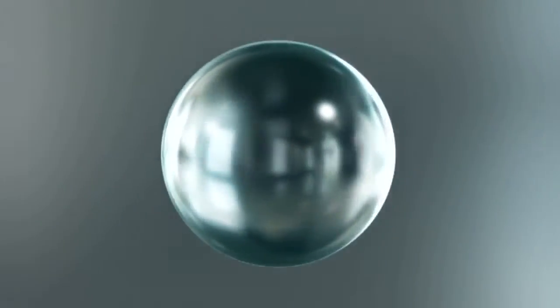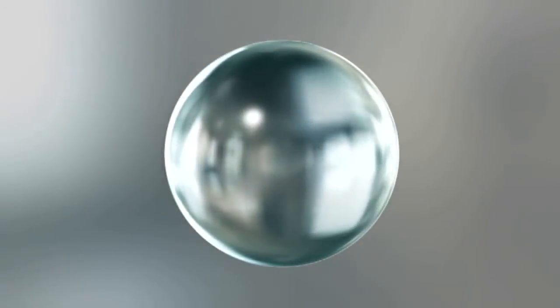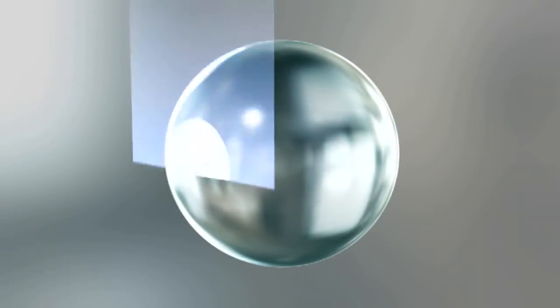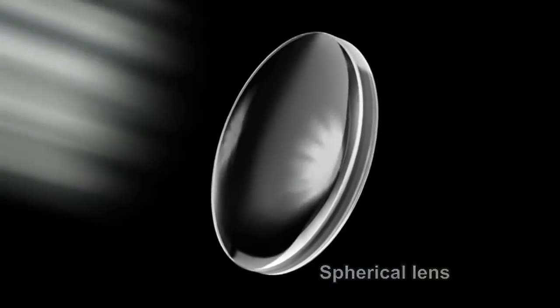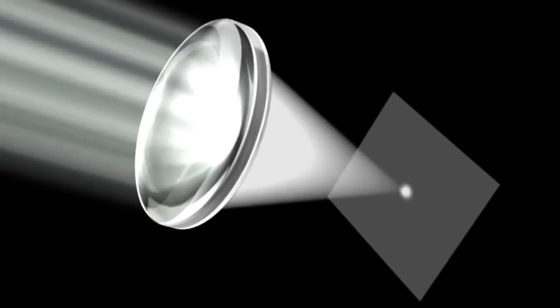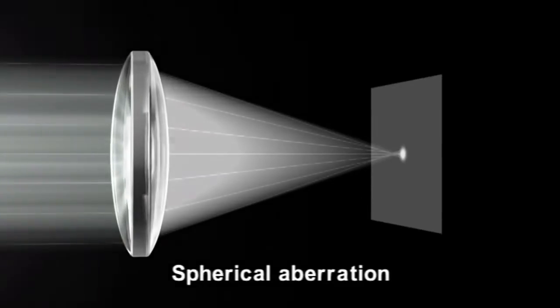The ideal lens is one in which incoming light meets at a single point. In the past, a variety of spherical lenses cut from the surface of a sphere were used to accomplish this. With spherical lenses, however, the incoming light doesn't meet at a single point. It is spread out slightly. This is known as spherical aberration.